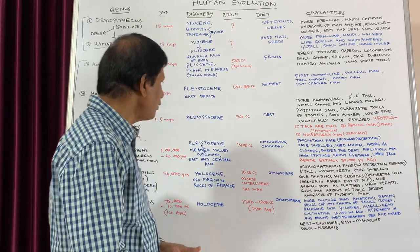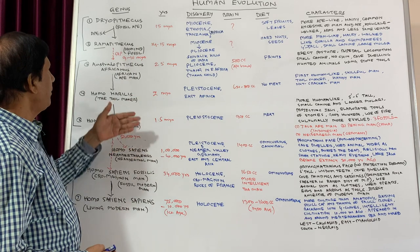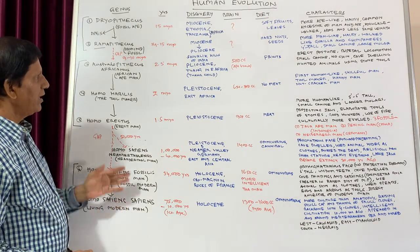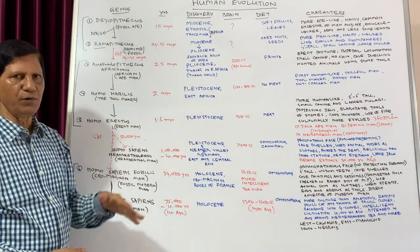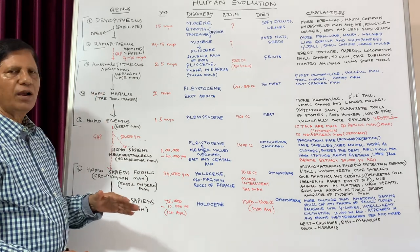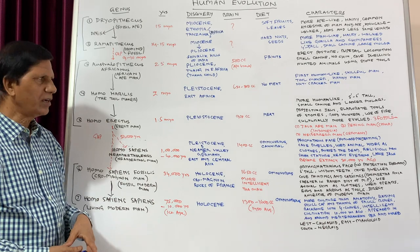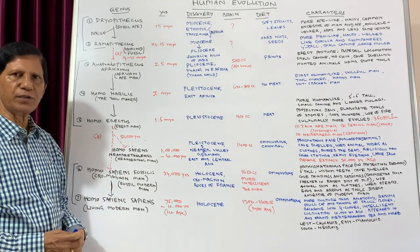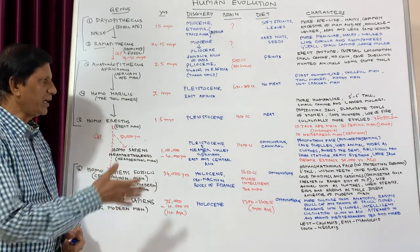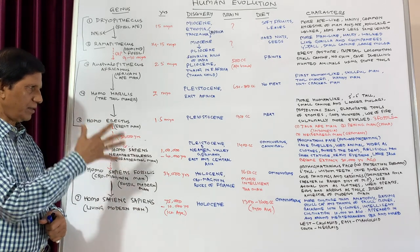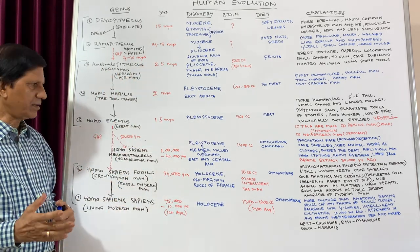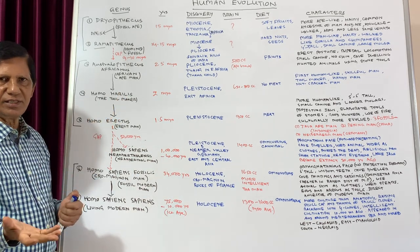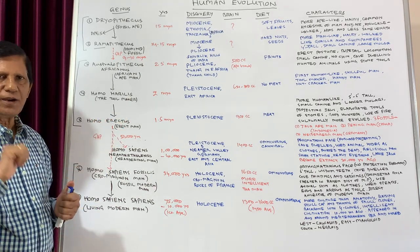So that is how the origin and evolution of human beings took place, from prehistoric times, from Dryopithecus all the way to the living modern man. All the details are given in this table. If you go through this table and remember the important characters, there is nothing more to read from the books on this human evolution topic. You can take a snap of the entire board and magnify it to read the smaller text.